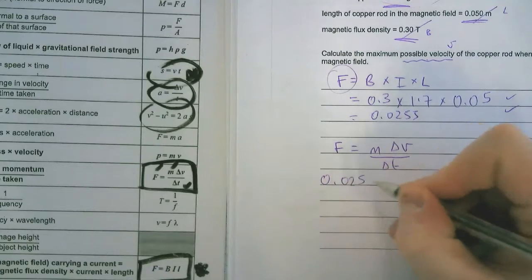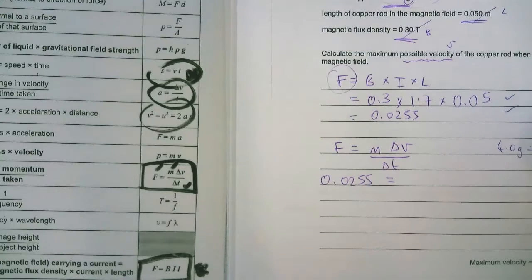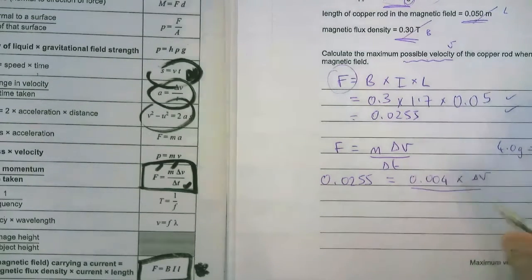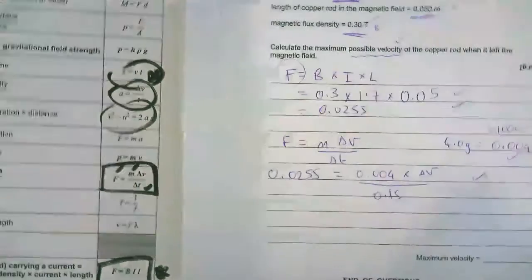So we're going to use our FIFA method. We're going to put our value in for force, so 0.0255. Mass, four grams, we need to put in kilograms, so that's 0.004 kilograms times by velocity. We don't know what that is divided by time. Once we've got that far, that's another mark.